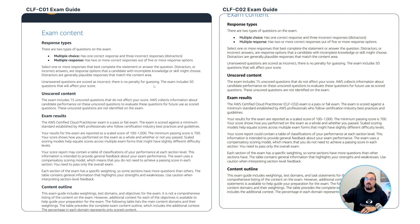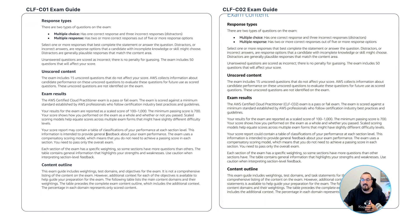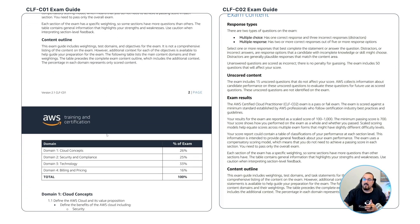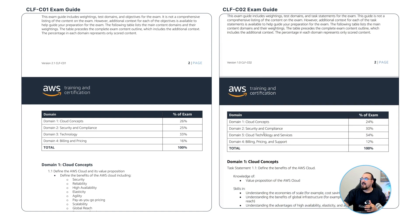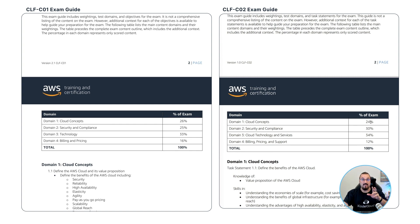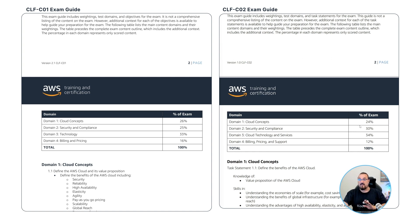The exam results haven't changed either. It's still a minimum score of 700 to pass, and there's no penalty for guessing. This is where things start to get a little interesting. The content outline is a little different. In cloud concepts, it used to be 26% and now it's gone down 2% to 24%. Security and compliance was 25% and now accounts for 30% of the exam — a significant 5% change.